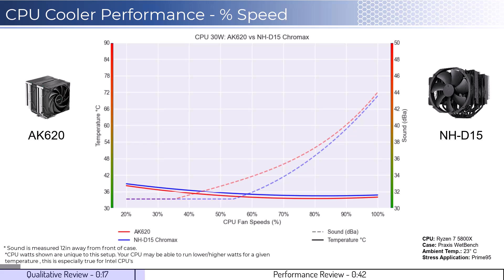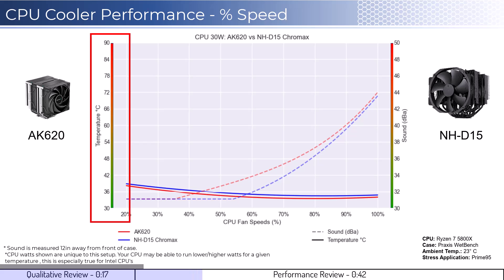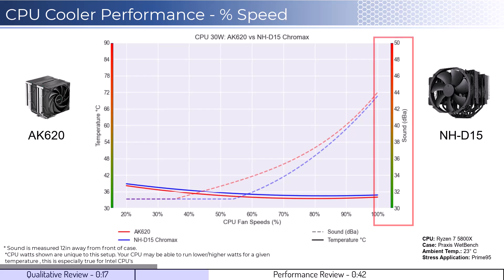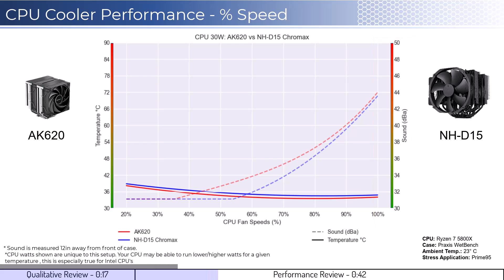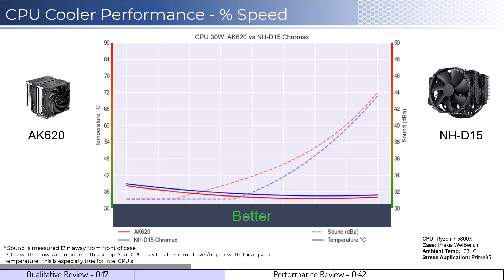We're going to cover two sets of graphs, one normalized by percent speeds and the second normalized by noise levels. Note that these graphs are created by using machine learning models to help break down the performance using over a million data points in an open case. This means that performance may differ depending on your case's airflow and your CPU. To orient you to the graph, the left side shows temperatures corresponding to the solid lines, with the right side showing noise levels represented by the dash lines. As a general rule, lower is always better for the data shown.